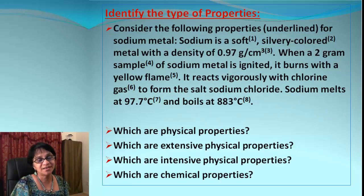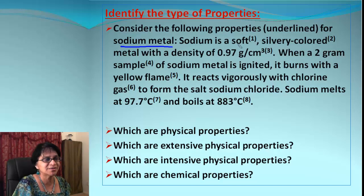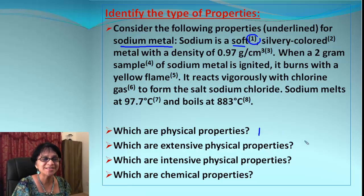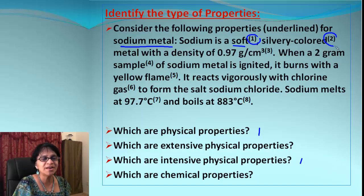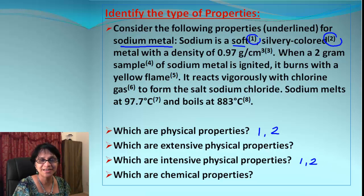Here's an example where we identify different types of properties for sodium. The first one is that sodium is soft — its soft nature will remain the same no matter the size of the piece, so it's an intensive physical property. Next, silvery color — since color doesn't change with the amount of matter, that also goes under intensive physical properties.